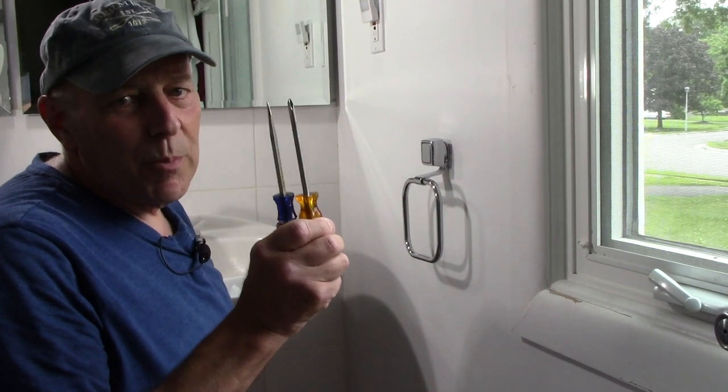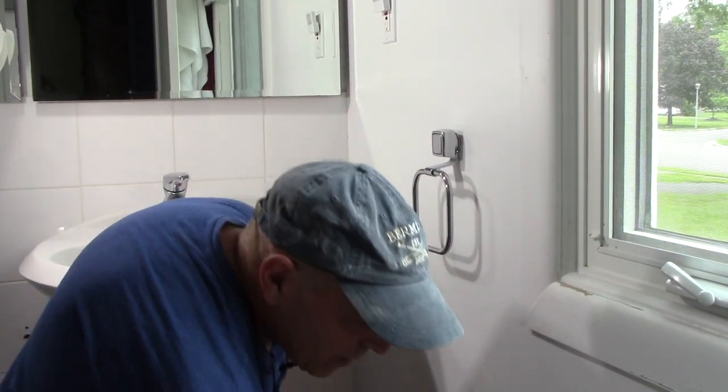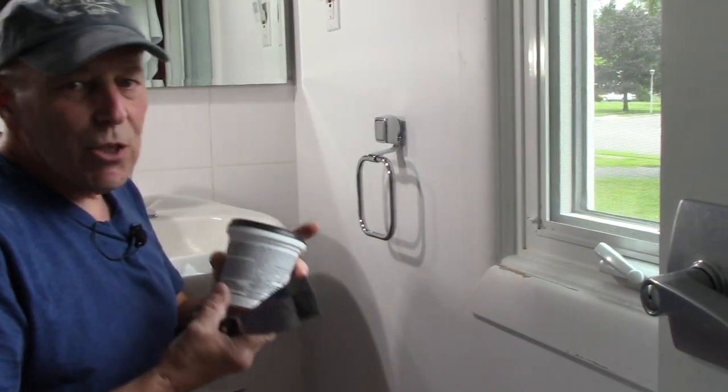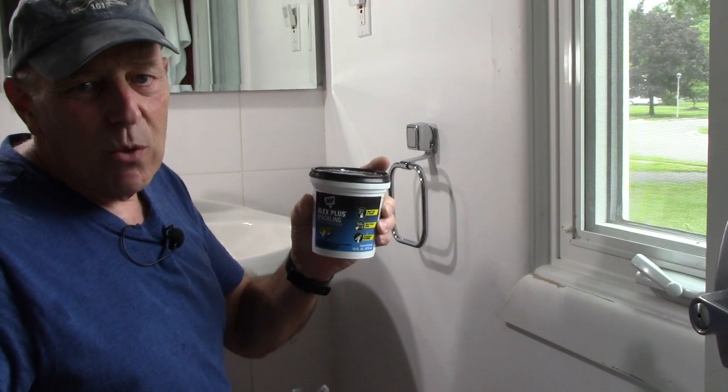First thing we're going to do is get a couple of screwdrivers, probably a Phillips head or a regular flathead. We're going to need some spackle which is a non-shrinking spackle. This is not an endorsement of this product; this just happens to be the one that I'm using.